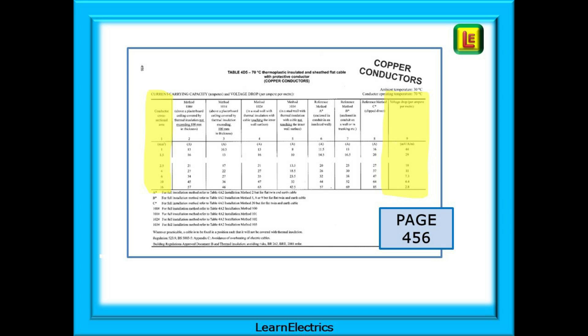And here we are at table 4D5. With practice you will learn to find it easily. In this video we have taken the long route so that you understand what is going on. After a short while you will just remember that table 4D5 is on page 456 and go there without a second thought. You can see the conductor sizes highlighted on the left and the voltage drop factors to use in the formula are highlighted on the right. One millimetre cable uses a factor of 44 in the formula and four millimetres twin and earth uses a factor of 11. The bigger the cable the smaller the volts drop as it's easier for electricity to flow through bigger conductors.